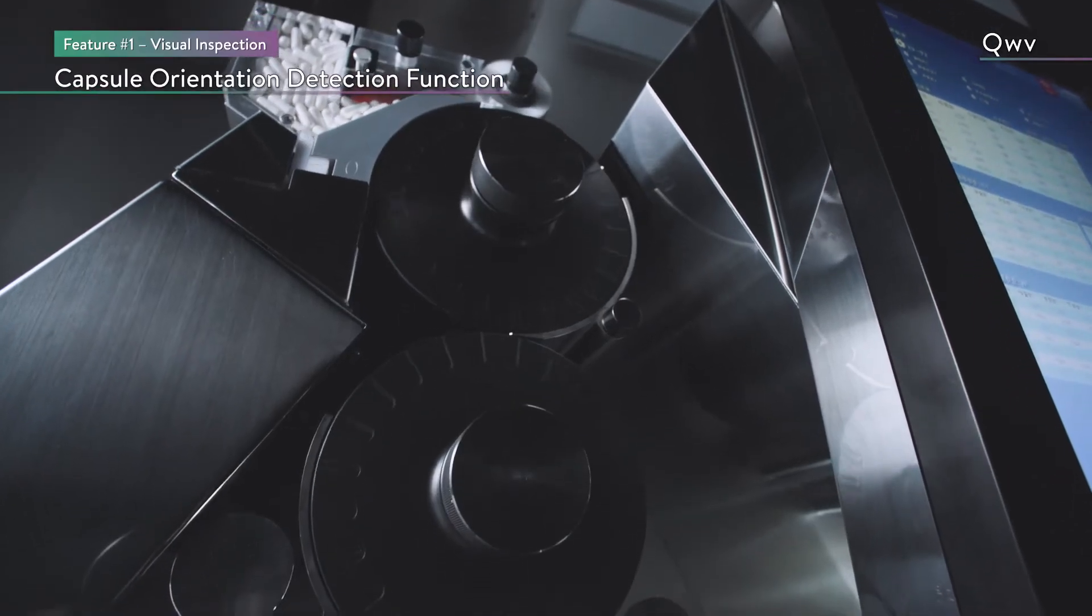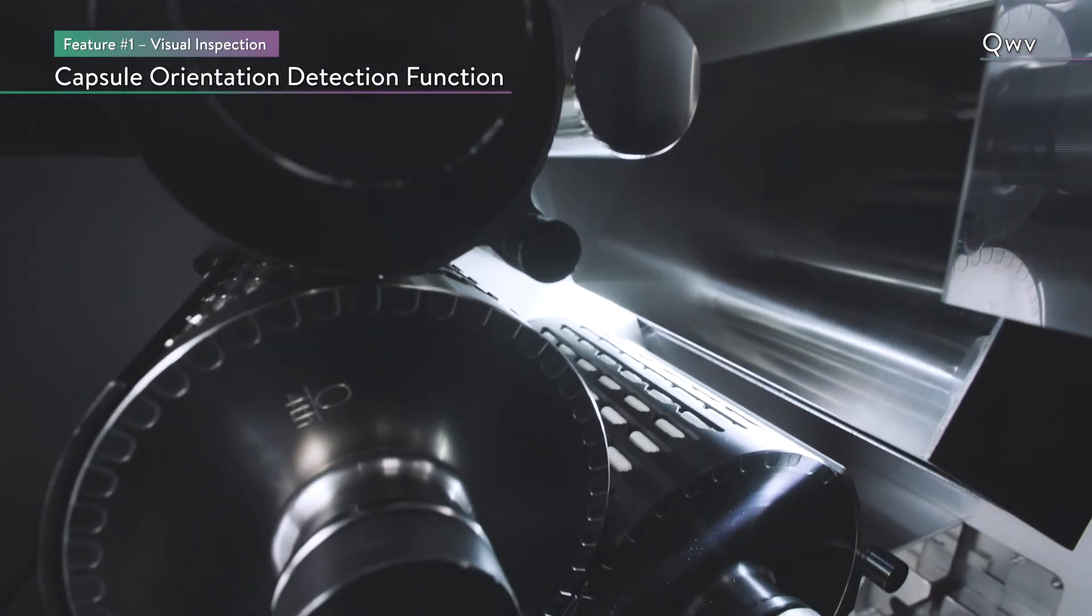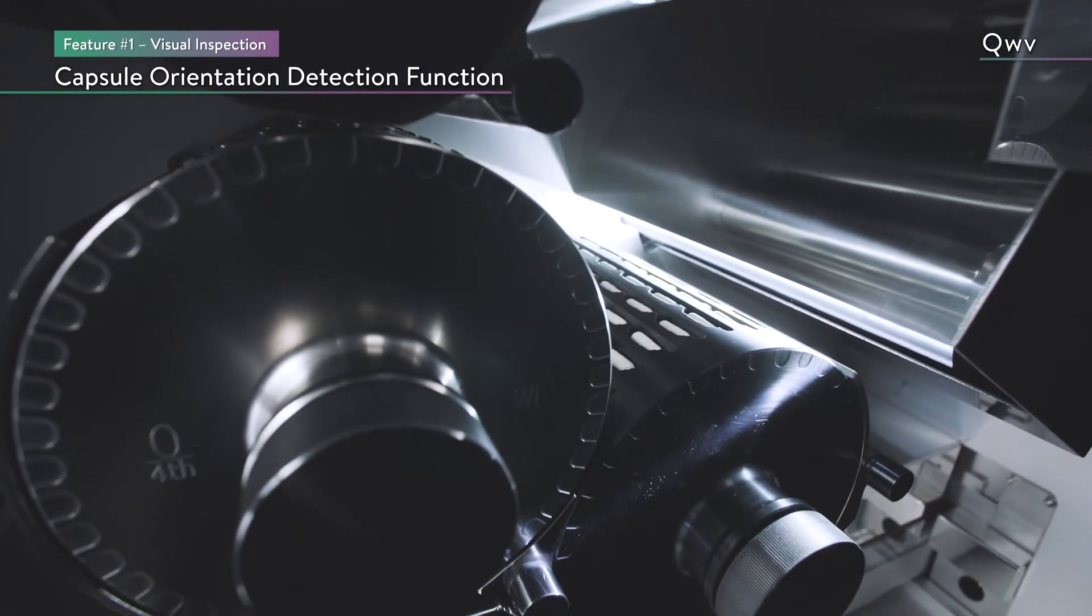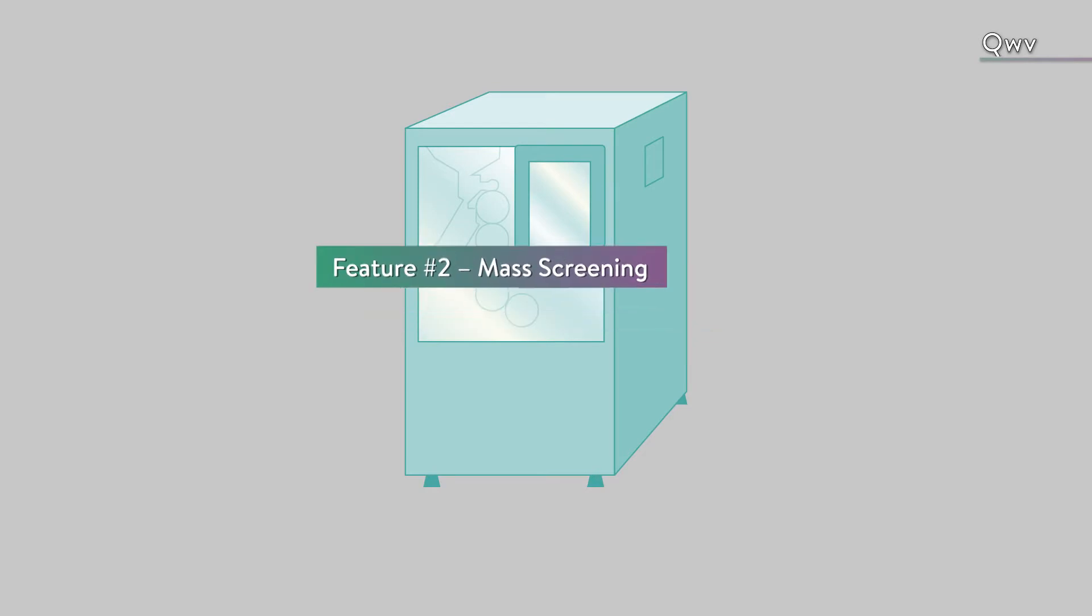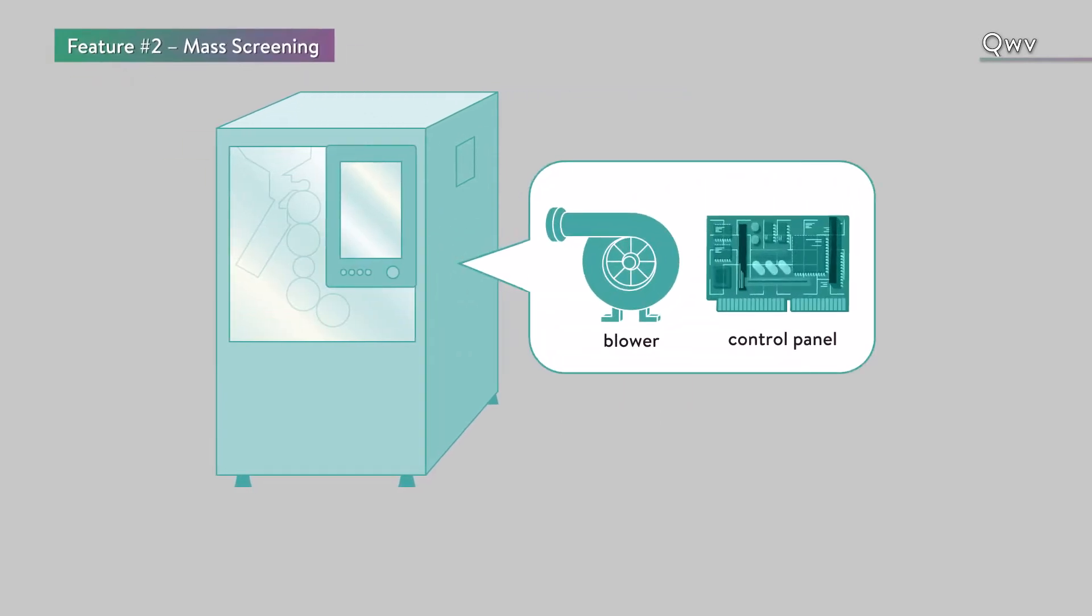In addition, the capsule orientation detection function eliminates the need for an orientation control roller. The CUVE has a built-in blower and control panel. They produce minimal vibration and noise, and the capsules can be weighed with an accuracy of plus or minus 2 milligrams.